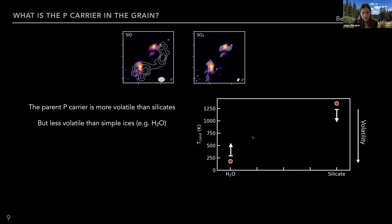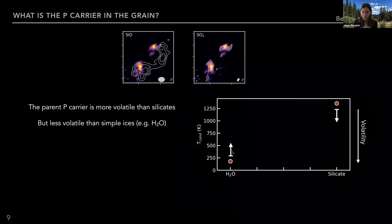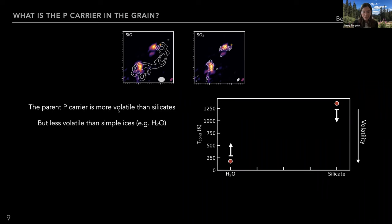On the other hand, the parent phosphorus carrier has to be less volatile than simple ices like water, because phosphorus molecules are never detected towards hot cores where you do see purely thermal sublimation of ices like water. So it seems like some shocking or energetic processing has to happen for phosphorus to enter the gas phase, unlike these very simple ices.